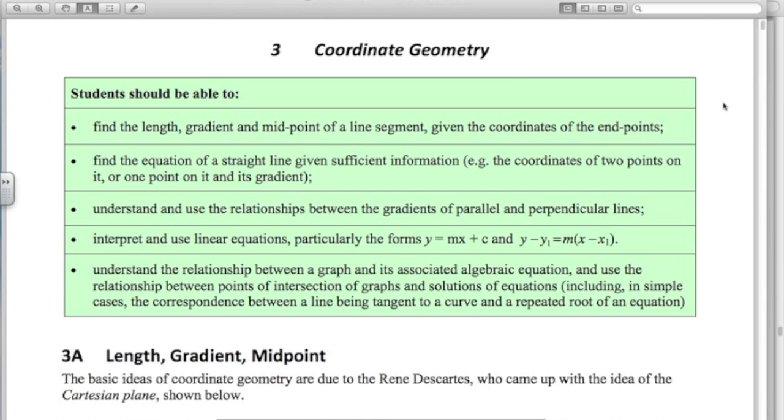Hi everyone, today we're going to look at the second part of coordinate geometry, chapter 3. We're just going to have a look at this second bullet point here, finding the equation of a straight line given sufficient information.